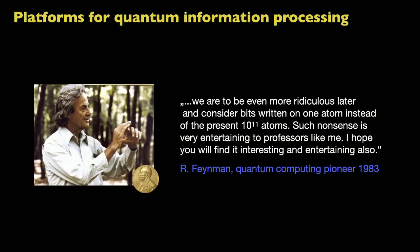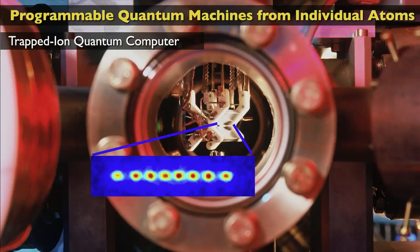The whole story goes back to Feynman in 1983, who gave a talk at a conference pointing out that we should actually build quantum devices. He was talking much more about quantum simulators — devices to solve quantum mechanical problems. Now let me give you an elementary hands-on explanation of how these quantum computers of trapped ions work, and then we'll move on to applications.